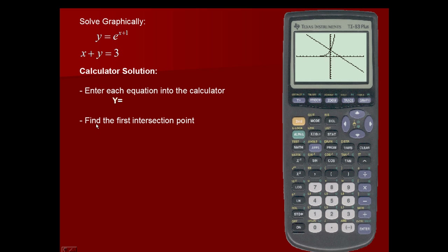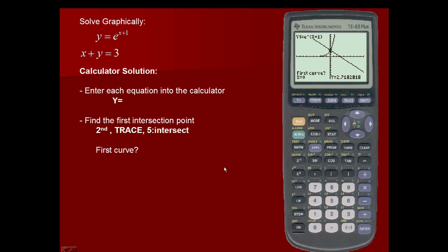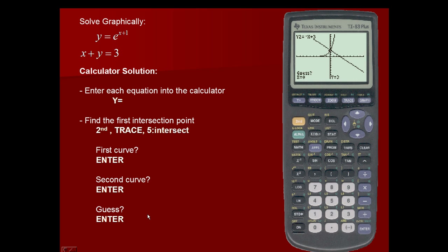Now we're going to find the point of intersection. We use second and trace, which is the calculate function, and scroll down to the fifth option, which is intersect, and press enter. It asks for a first curve — it's on the first curve of our system, so we press enter. It asks for a second curve — it's on the second curve of our system, so we press enter. It asks for a guess — again, we press enter. And we have our ordered pair solution.